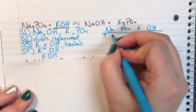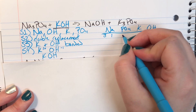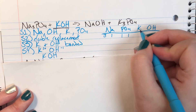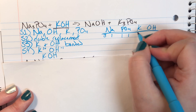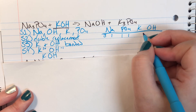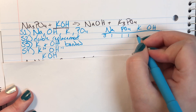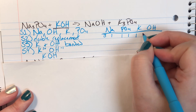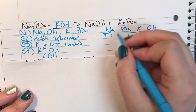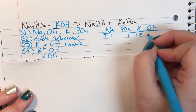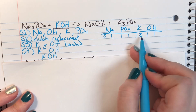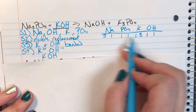Counting: sodium left is 3, right is 1. Phosphate left is 1, right is 1. Potassium left is 1, right is 3. Hydroxide left is 1, right is 1. Both metals are unbalanced.